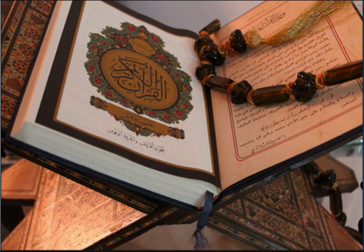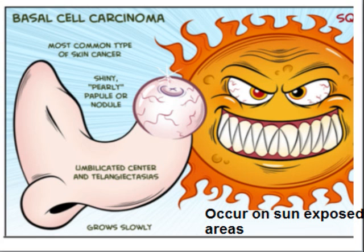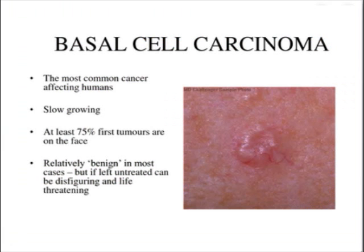Today we are going to discuss basal cell carcinoma of the skin. It occurs on sun-exposed areas and is the most common tumor of the skin. It is slow growing, and at least 75% of first tumors are on the face. It is relatively benign because it never metastasizes — no spread to distant areas.